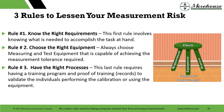Back to the rules — there are three rules. Rule one: know the right requirements. The first rule involves knowing what is needed to accomplish the task at hand. Rule number two: choose the right equipment — always choose measuring and test equipment capable of achieving the measurement tolerance required. Rule three: have the right processes. The last rule requires having a training program, proof of training, and records to validate the individuals performing the calibration or using the equipment.